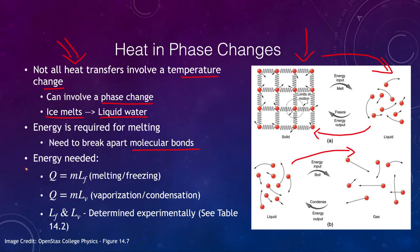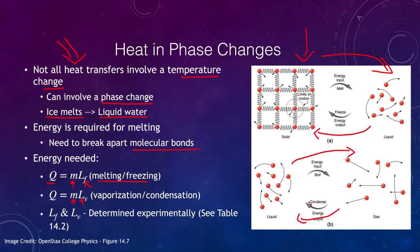The energy needed is given by Q, which equals the mass of the material times the latent heat of fusion, L_f. This applies for melting or freezing — going from a solid to a liquid or a liquid to a solid. For vaporization or condensation, it is Q = m × L_v, the latent heat of vaporization, and it applies the same way depending on which direction you're going.